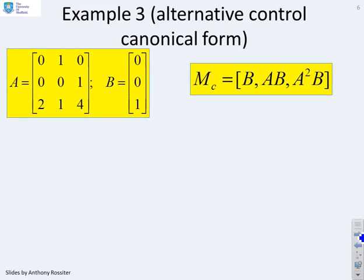Here's example 3. Now, this is also in control canonical form. But you'll notice it's the alternative form where now the coefficients are on the bottom row. So we're going to do the same point here. First, calculate AB.